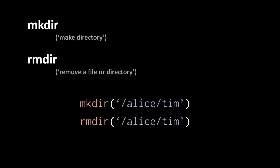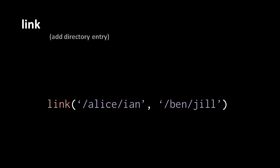We can actually place a single file in multiple directories. Once a file has been created, we can add it to other directories with the system call link. For example, we're taking the existing file /alice/ian and adding that file as another entry in the directory /ben, giving it the name jill. So now we have this single file with one inode found with the name ian in the directory alice, but also found with the name jill in the directory ben. As far as the file is concerned, neither one is its true name — they are both equally valid listings of the same thing.